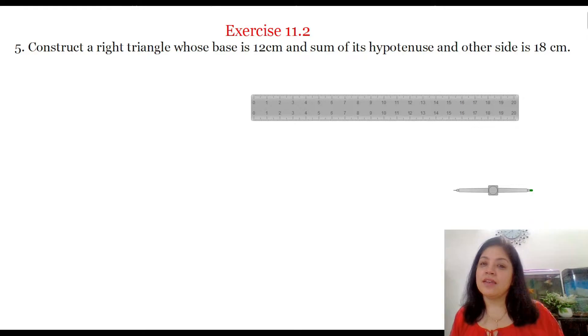Hi, I am Hema and in this video I am going to do question number 5 of exercise 11.2 NCERT class 9th mathematics. Here the question is, construct a right triangle whose base is 12 cm and sum of its hypotenuse and other side is 18 cm.